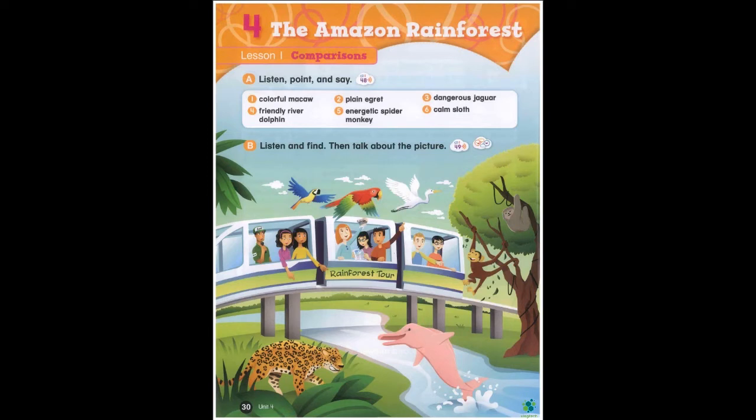Page 30. B. Listen and find. Then talk about the picture. Julie, look at that dolphin! Wow, it's pink! Excuse me, sir, what kind of dolphin is that? That's a river dolphin. They're very friendly. They live in South America.